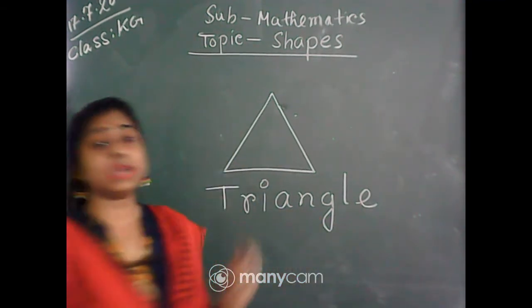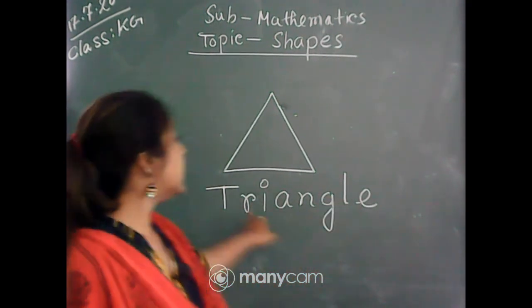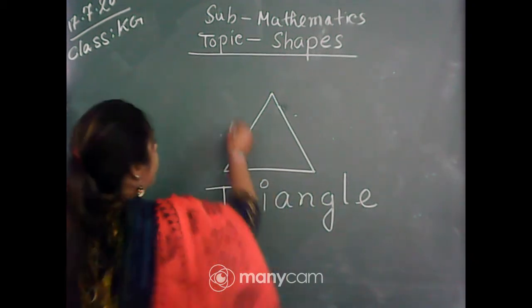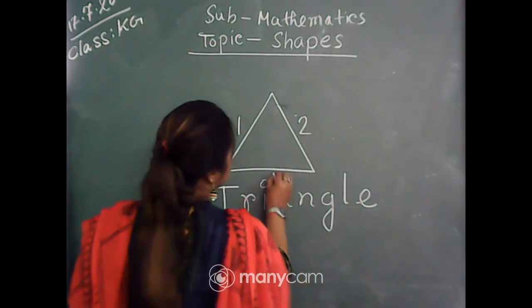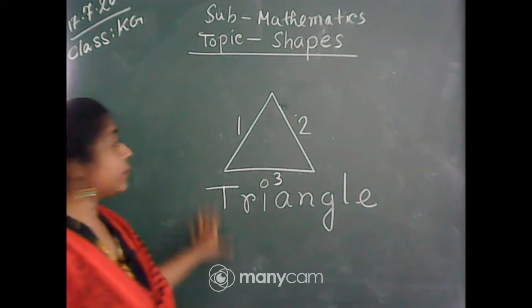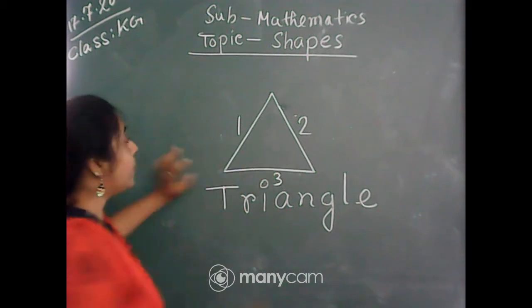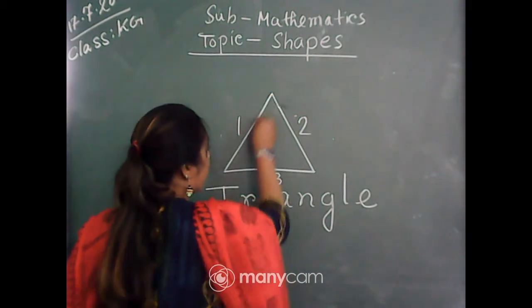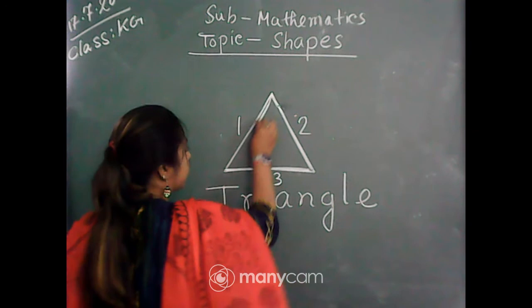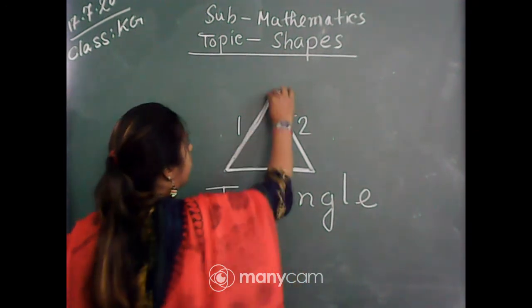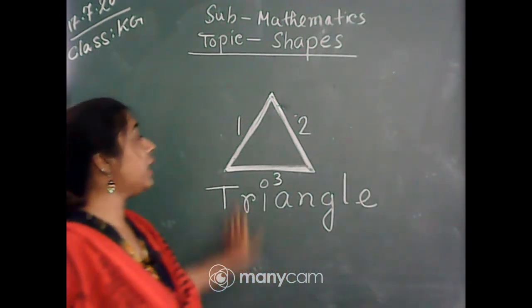Because tri means three — T, R, I — tri means three. Triangle means three sides: one, two, three. Look at the board — this is called triangle. It has one side, two sides, and three sides. This is called triangle.